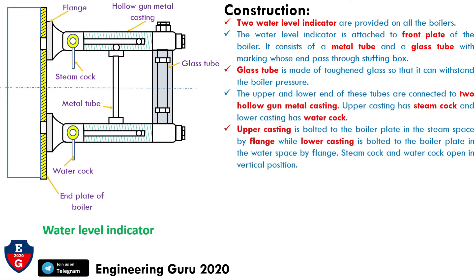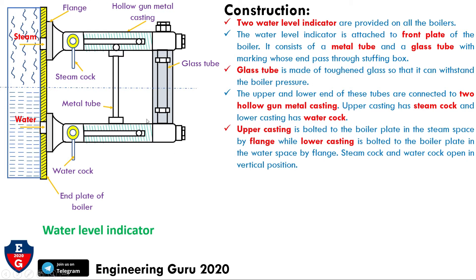The upper casting is bolted to the boiler plate in the steam space by a flange, while the lower casting is bolted to the boiler plate in the water space by a flange. The steam cock and water cock open in the vertical position. This flange is for the upper side and this flange is for the lower side. Here, this is the water-entering area and this is the steam-entering area.